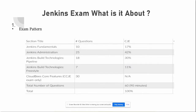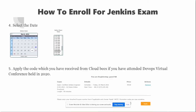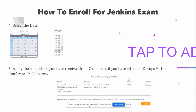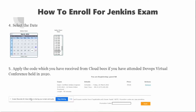Moving on — here is how you can enroll for the Jenkins exam. All you need is to log in to the CloudBees website, register yourself, and click on exam registration. Like other exams such as AWS and Azure, this exam will also have someone monitoring your screen. Once you click on exam registration, select the date and time. If you attended the DevOps virtual conference in 2020, you would have received an email from CloudBees with a promotion code. Once you enter that promotion code, the certificate will be free for you — no cost needed.